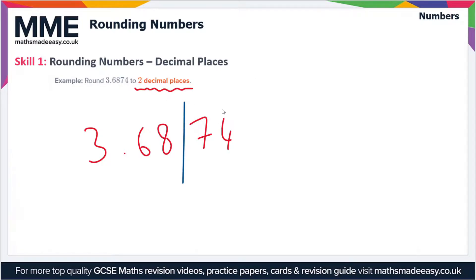Now we look at the digit after the cutoff point, so in this case it's a 7. And the rule is: if it's 0 to 4, so in other words less than 5, we round down. And if it is 5 or more, so in other words 5 to 9, then we round up.